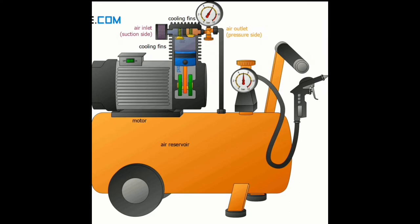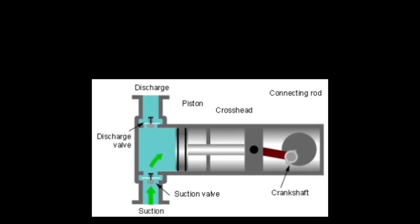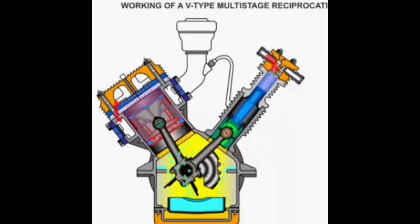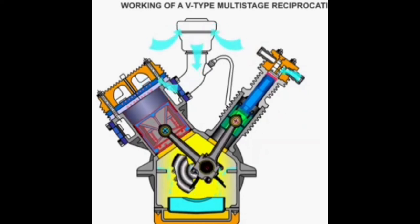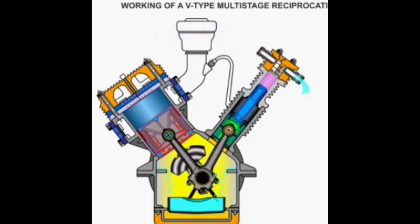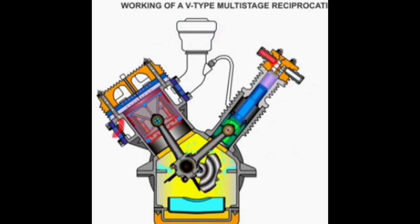This is the function, how it will work in the air compressor. One side it will be suction from the ambient temperature, and the other side will be discharge to give the air in the air tank. From the air tank, you can use anywhere as per the requirement of the air.